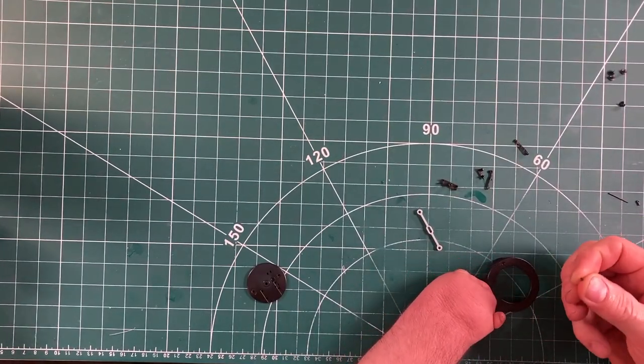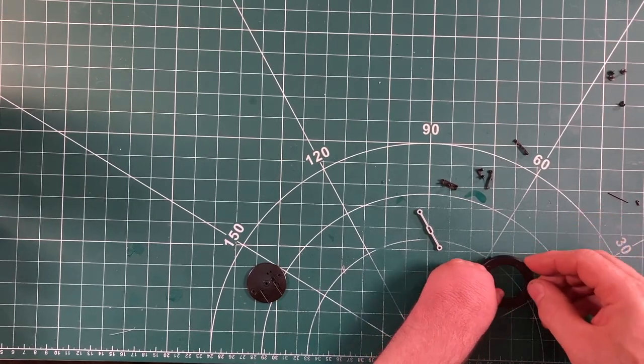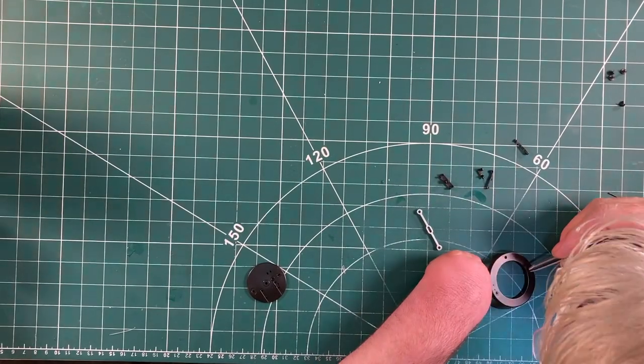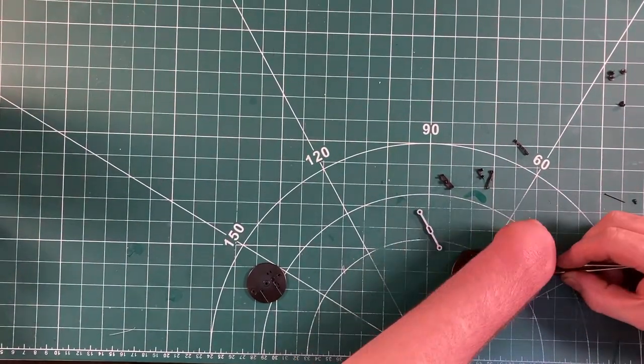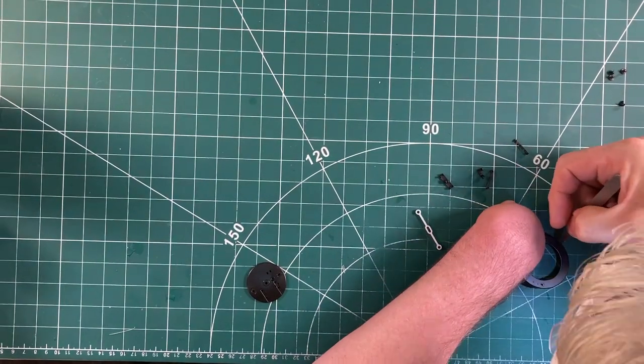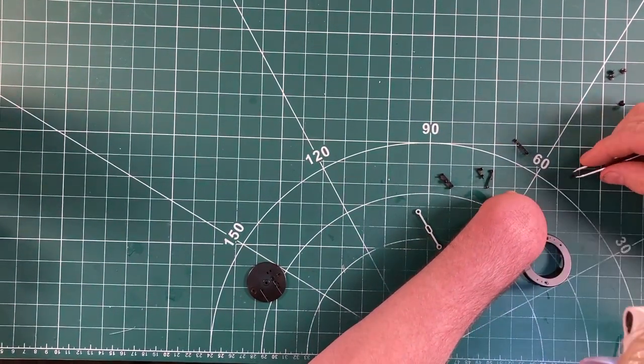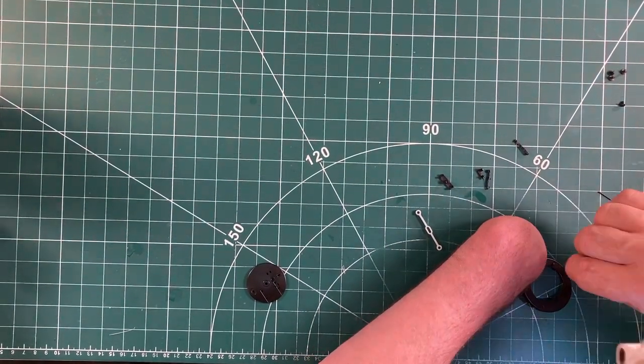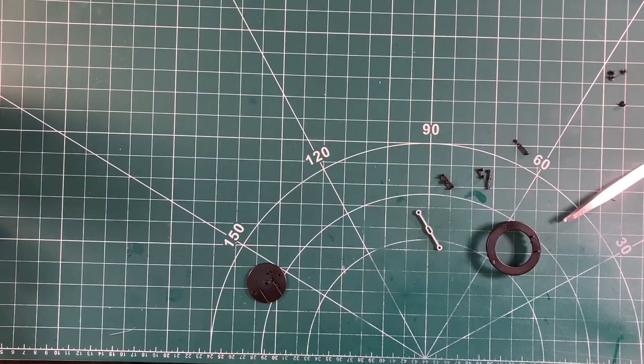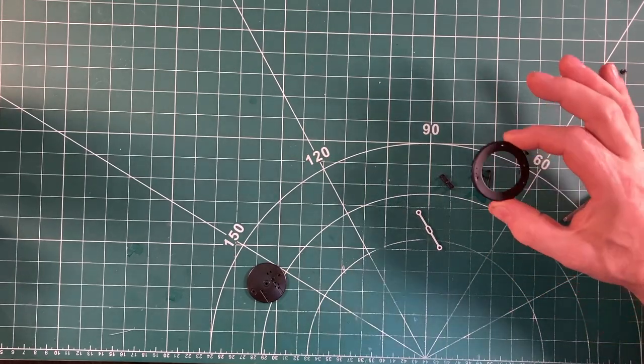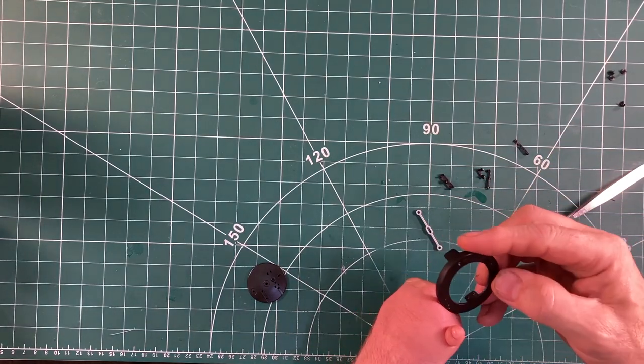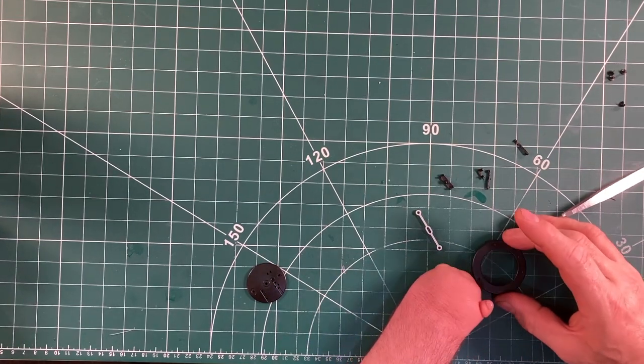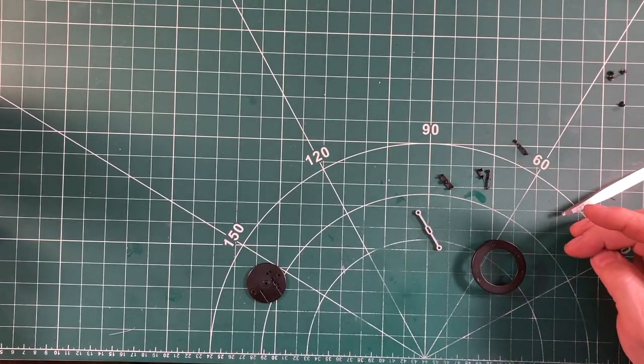So the first part is we've got to put these little dinky little things into these square holes. So they go in like that. And they get glued in from the back. You don't want those falling out. I'll glue those in a minute just to make sure they're facing the right orientation.